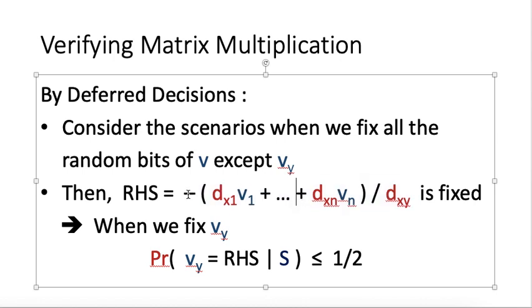If we are very lucky, this term evaluates to be equal to 0 or 1, then in such a case, there is a way that Vy could be equal to the right-hand side. But in any such case, the chance of this happening is equal to 1 over 2 only. In general, we write down the probability of Vy equals right-hand side given S is at most 1 over 2, because some cases it is 0, some cases it is 1 over 2. In general, it is less than or equal to 1 over 2.